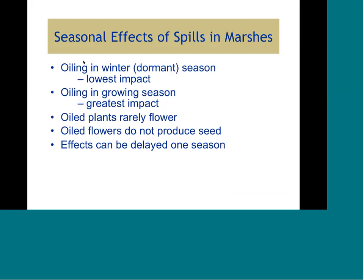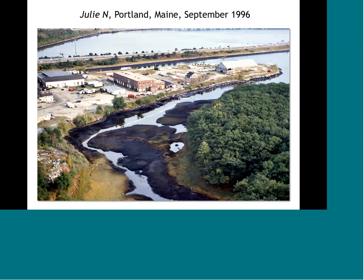There are important seasonal effects. When oiling occurs in winter — during the dormant season — impacts are lowest because above-ground marsh vegetation goes into senescence and plant metabolism slows down. Oil impacts are greatest during the growing season when plants are putting out above-ground vegetation and using their carbohydrate reserves, making them more stressed. Oiled plants may not flower or produce seed well, and plant mortality can sometimes occur a year later depending on conditions.